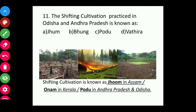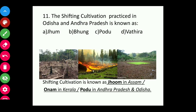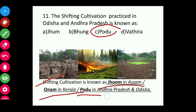Question eleven: The shifting cultivation practiced in Odisha and Andhra Pradesh is known as Jum, Podu, Bung, or Vathira? The answer is Podu. For us in Nagaland, we call it Jum cultivation, but in Andhra Pradesh and Odisha they call it Podu. Shifting cultivation is also known as Jum in Assam, Onam in Kerala, and Podu in Andhra Pradesh and Odisha.